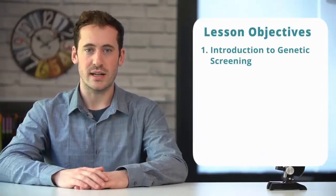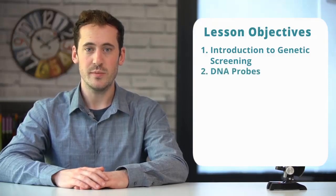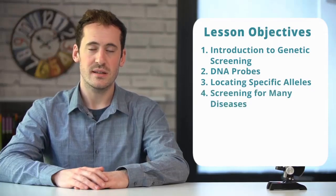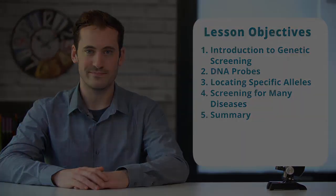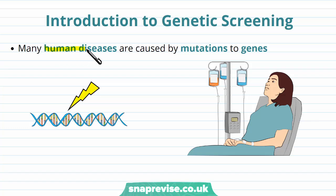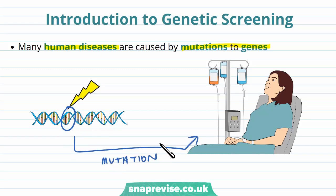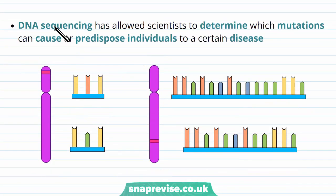In this video we'll be looking at an introduction to genetic screening, DNA probes, locating specific alleles, and screening for many diseases. Many human diseases are caused by mutations to genes — if there's a mutation to a particular part of the genome it can lead to a disease. A mutation is a change in the genetic structure and order of nucleotides.